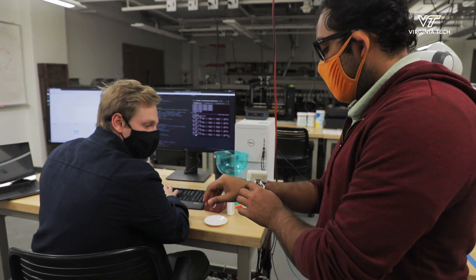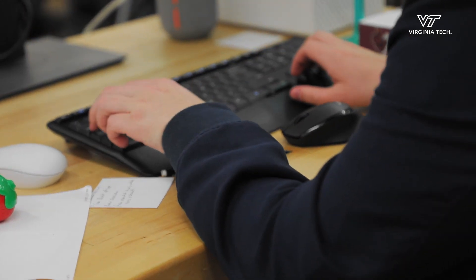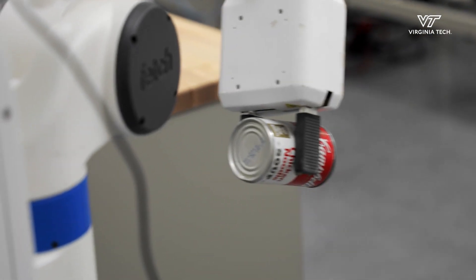They might have a physical limitation or disability, or even just be inexperienced. They've never really worked with these robots before and are unsure how best to teach that robot what they want. Existing algorithms expect the human teacher to always be perfect, to always show exactly what it is they want the robot to do.